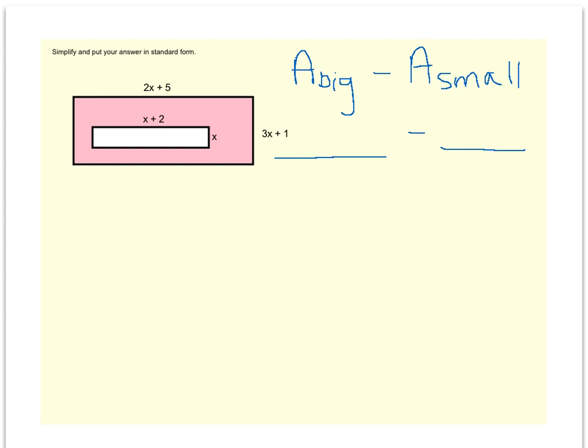So let's start by looking at the area of the big rectangle. We know a rectangle to find the area, it's base times height. Well, I've got a base of 2x plus 5 and a height of 3x plus 1. So I have to FOIL.